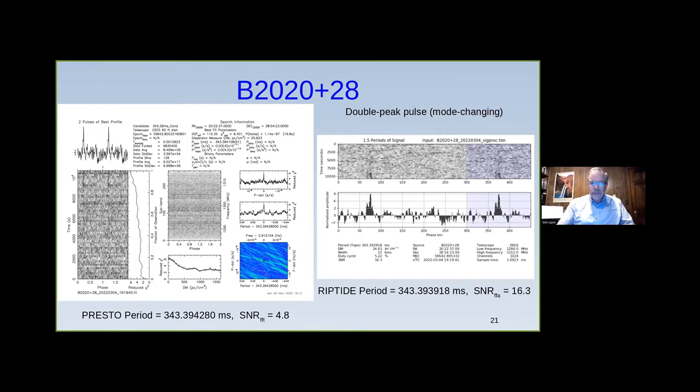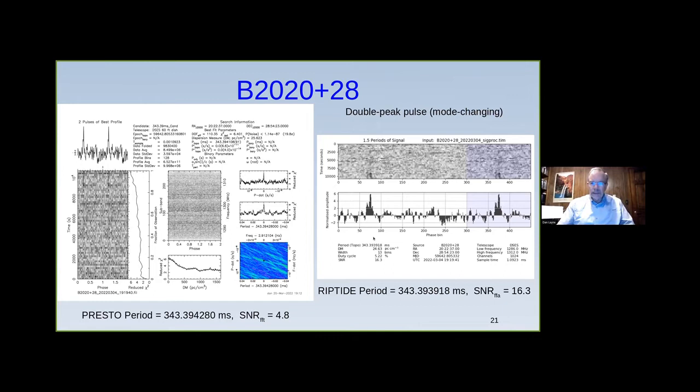Looking at the data: for about the first 9,000 seconds it's hard to see any phase; toward the end you start seeing the phase trace. The same pattern appears in both Presto and Riptide — that's scintillation. On the B2020+28 data, we see the double peak on the Riptide plot but not on the Presto plot. Fascinating — we don't know why.